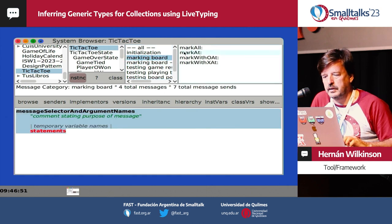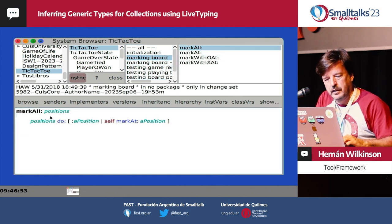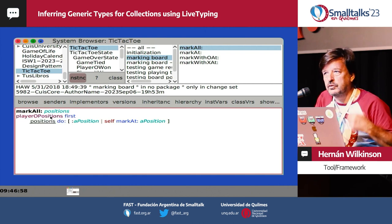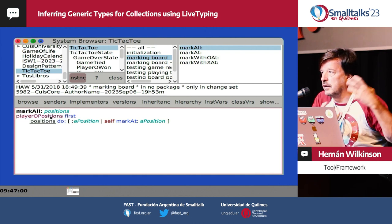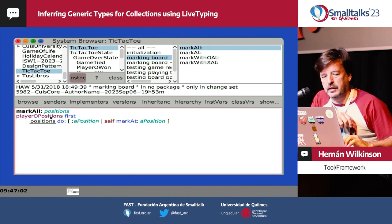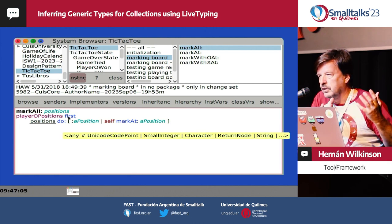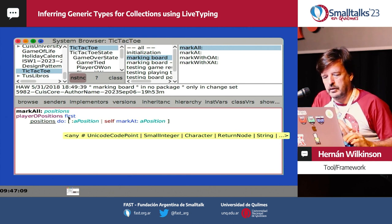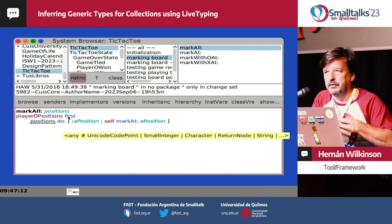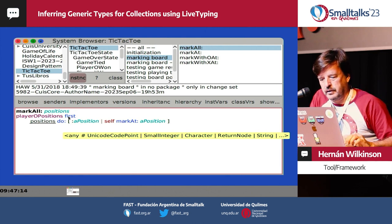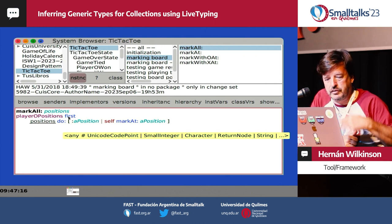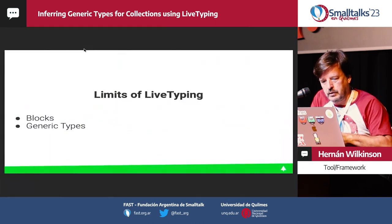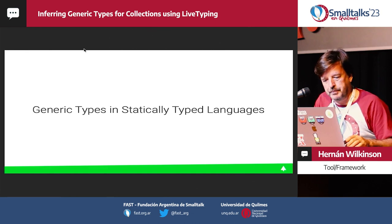For example, if you say playerOPositions first, you would like to see the type of the objects that are inside that collection. But there is not really any good type information because it could be anything. The 'first' method returns any kind of object because it's a generic implementation. So that's the limitation we currently have with live typing.